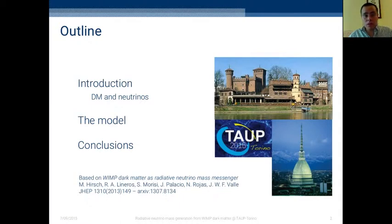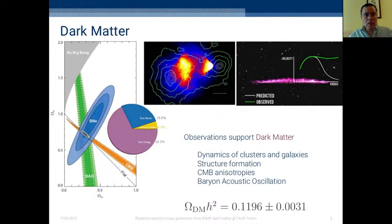This work is based on a paper with collaborators in Valencia titled WIMP Dark Matter as Radiative Neutrino Mass Messenger. We are here talking about dark matter, and we are pretty sure of the presence of this dark matter that is supported by many different types of observations like dynamics of clusters and galaxies, structure formation, CMB anisotropies, and baryon acoustic oscillation.